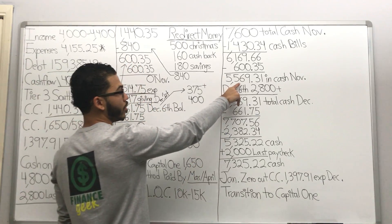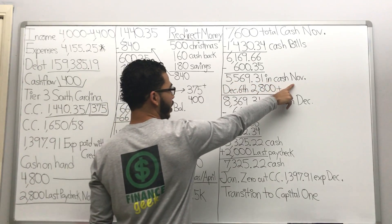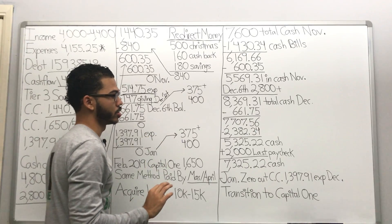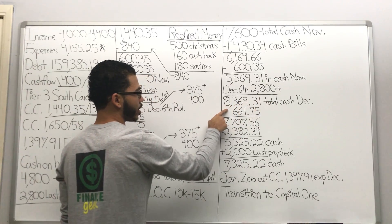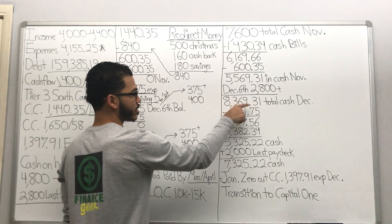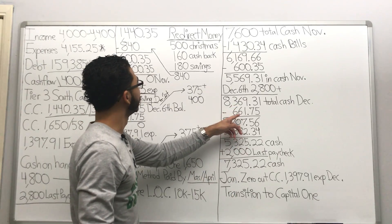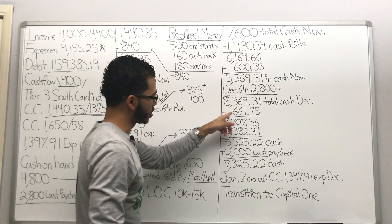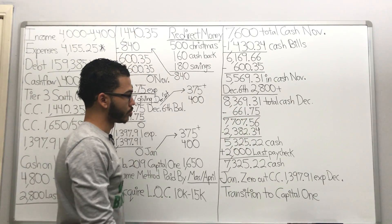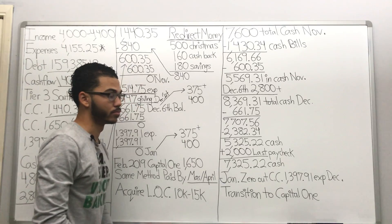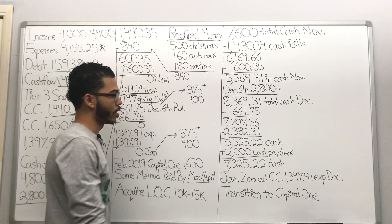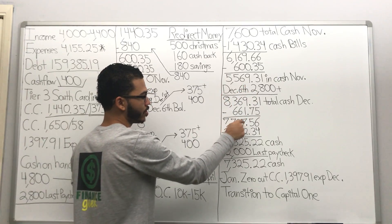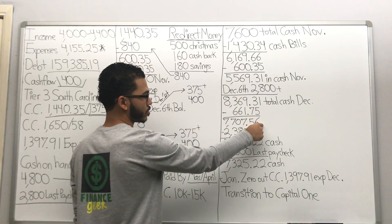I've got this money on hand in cash. Come December 6th, she's gonna get another paycheck for $2,800, gonna bring our total cash to $8,369.31. What am I gonna do? Well, that same day I'm gonna dump $661.75 into the credit card, zero that out. It's gonna bring the balance cash on hand to $7,707.56.